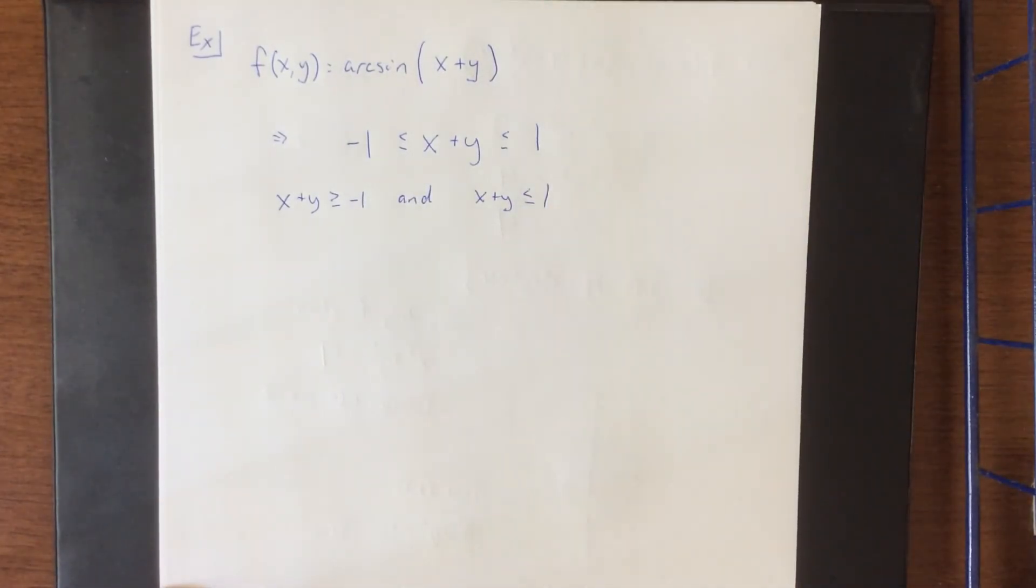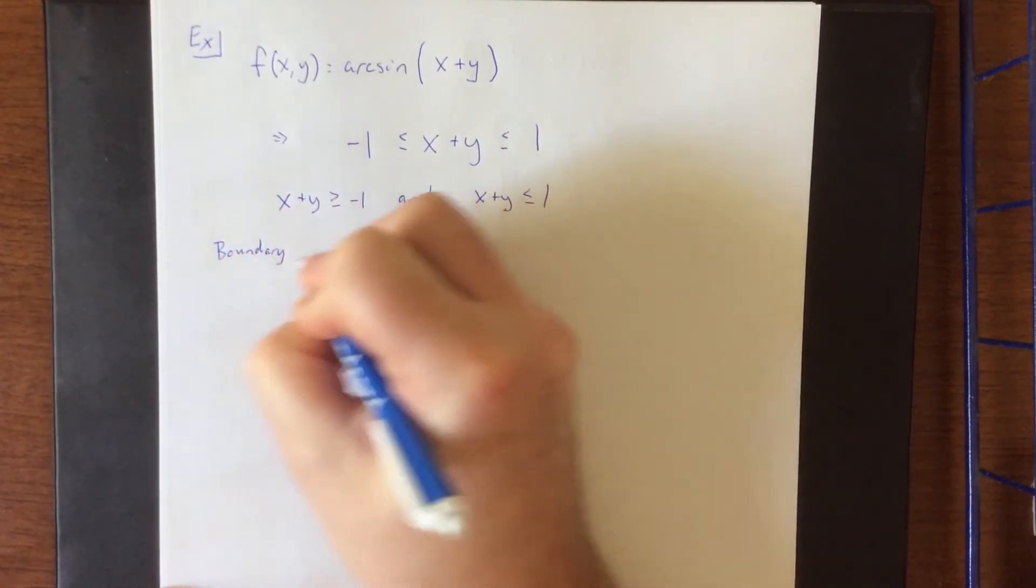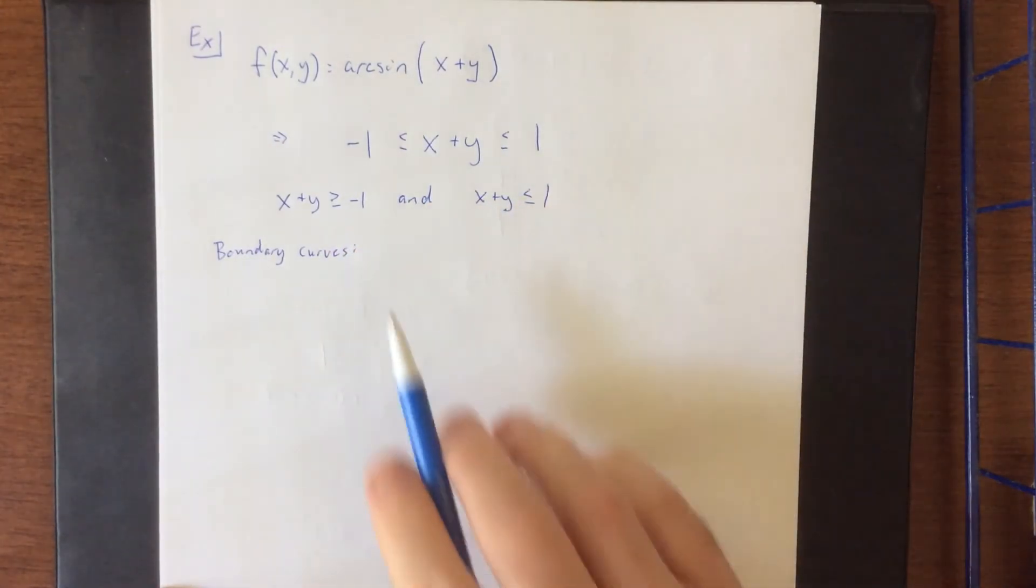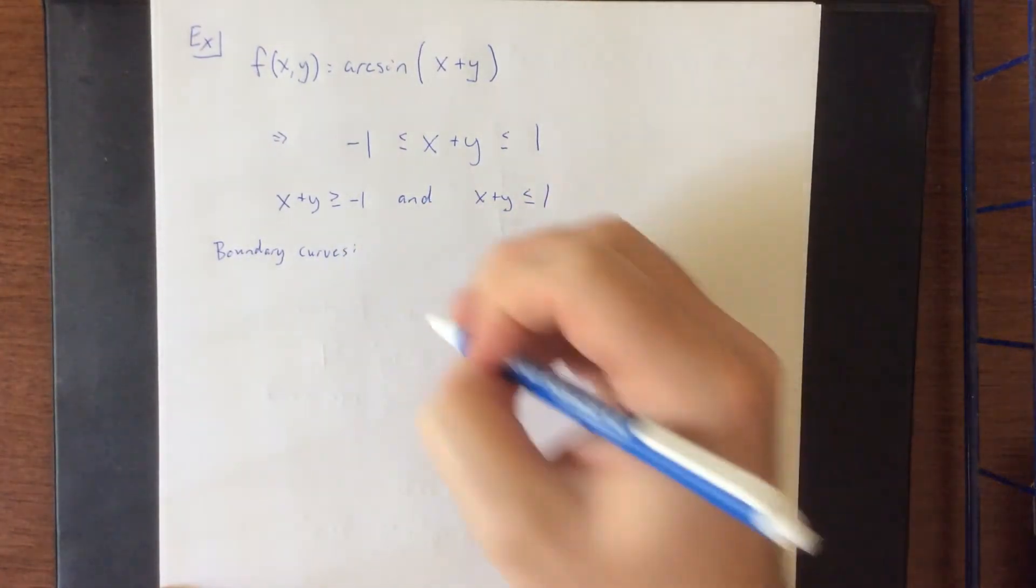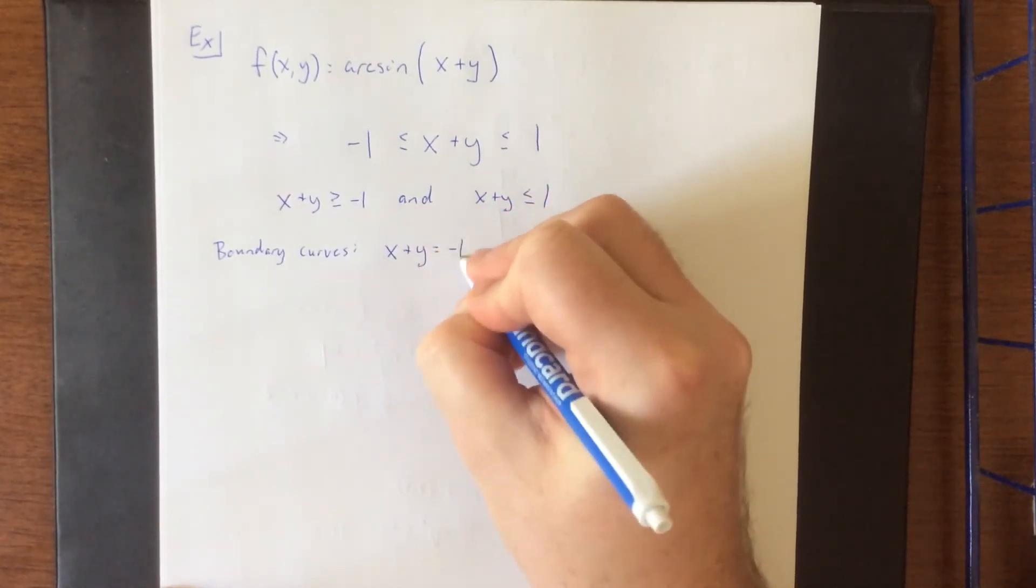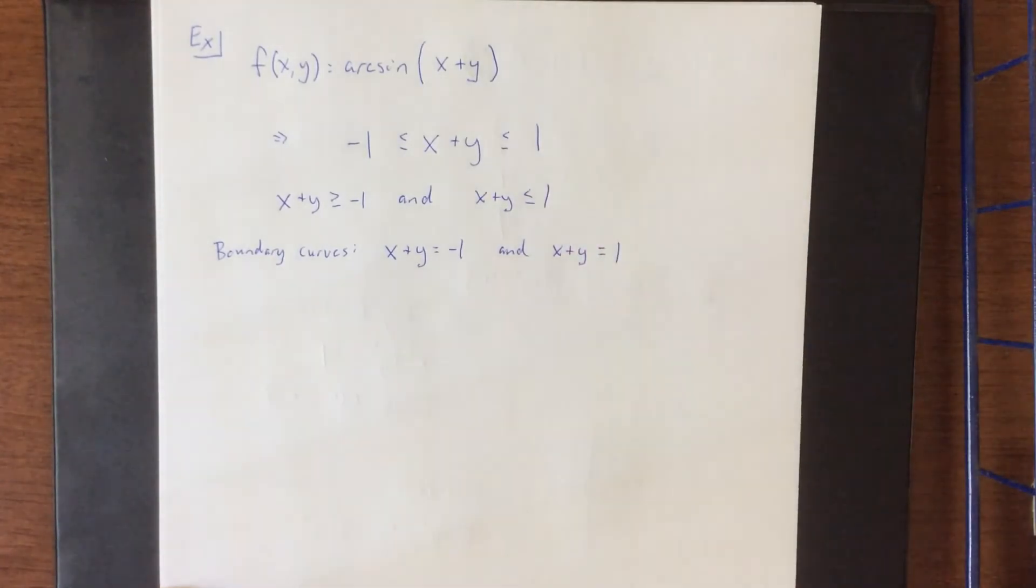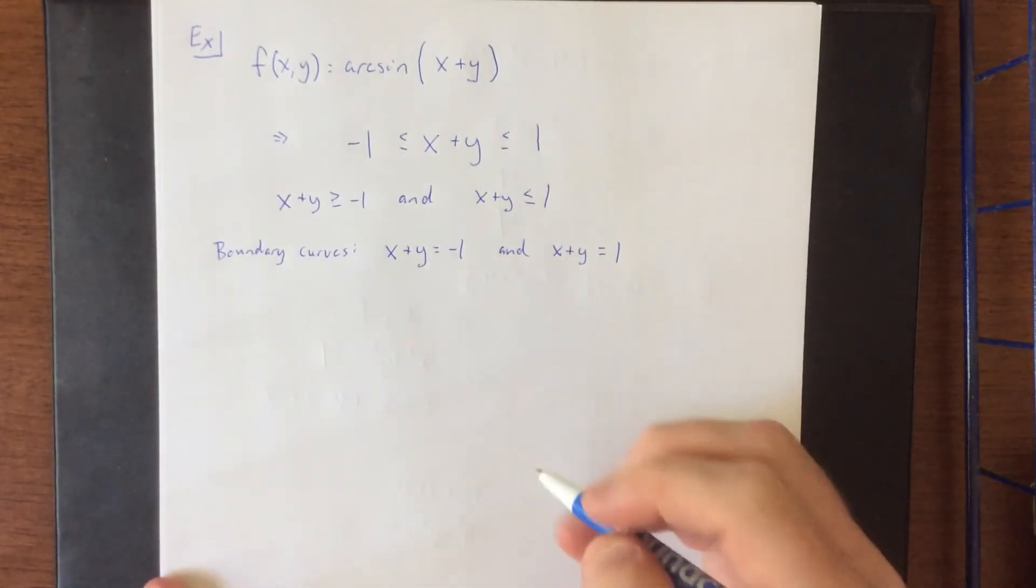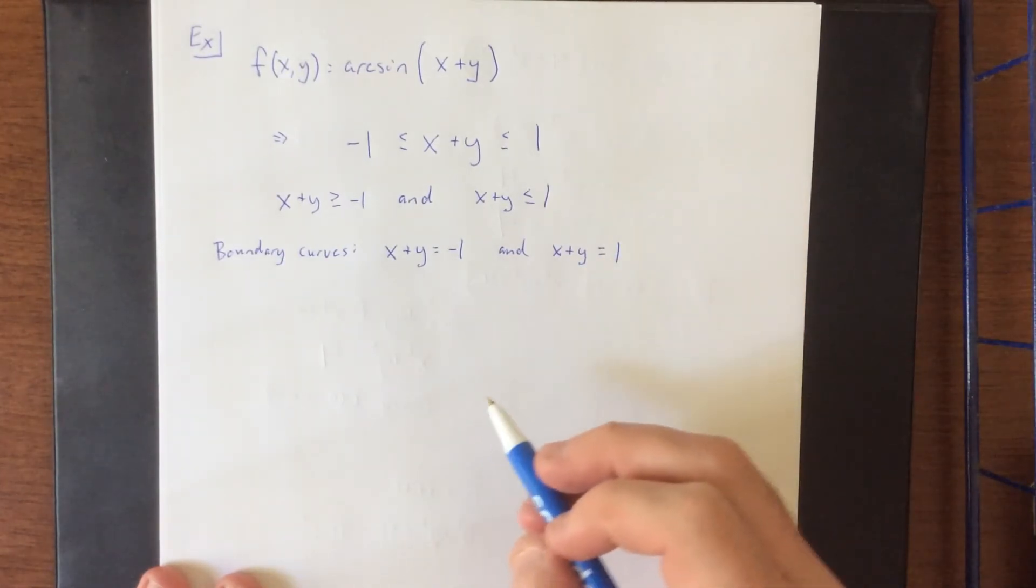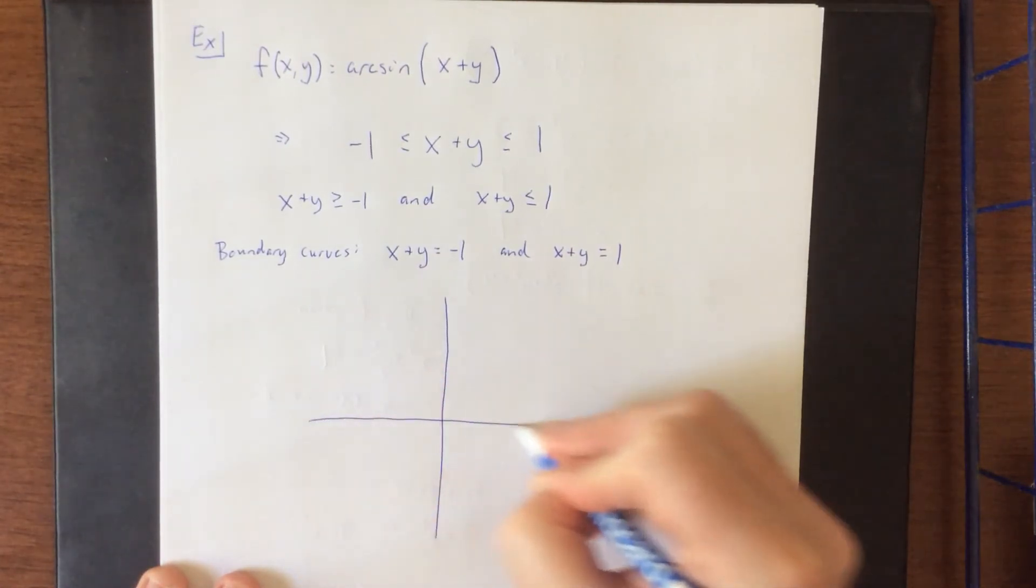Now if we do as we did before, the boundary curves would be what we get by replacing the inequality signs with an equal sign. So this would be x + y = -1 and x + y = 1. Now both of these are going to be relatively straightforward to graph. So with that in mind, I'll go ahead and draw an example of the Cartesian plane here.